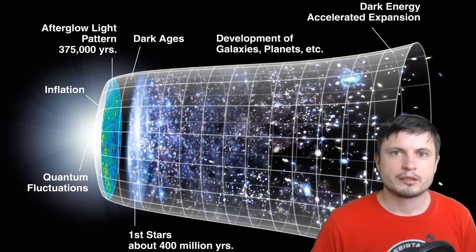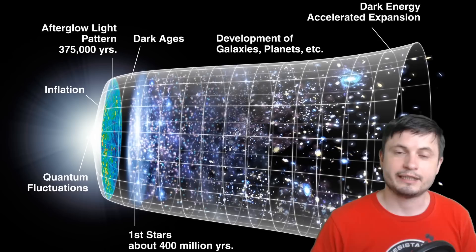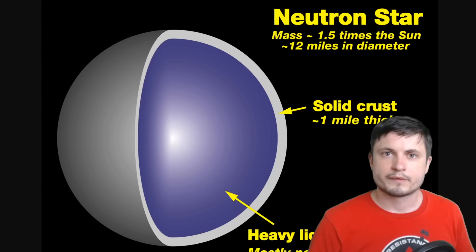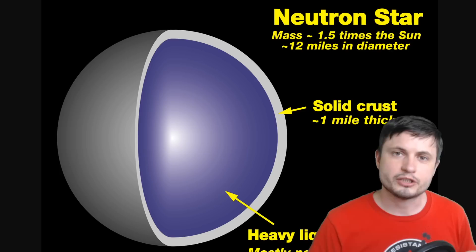But today we believe that quark matter existed in these first few seconds of the existence of the universe itself and it may also still exist today and not even only in neutron stars. So trying to understand what neutron stars may possess on the inside could actually help us understand a little bit more about quark matter as well.